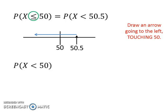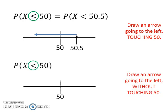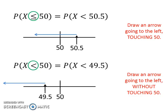Then we have probability of x less than 50. To determine whether to add or minus 0.5, draw a line with 50 on it like this. Because of the less than sign here, we need to draw an arrow going to the left of 50 without touching the 50. In order for the arrow to not touch 50, we reverse a little bit from 50. Since we reverse a little bit, we need to minus 0.5 from 50. Thus, the probability becomes probability of x less than 49.5.